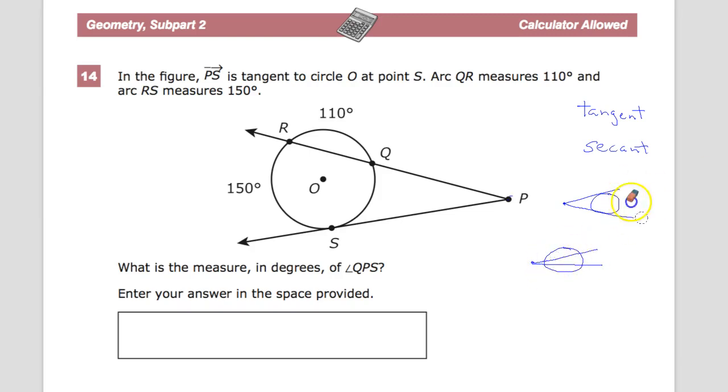So, no matter which one it is, it doesn't really matter. You can solve them the same way every time. Really, the formula ends up being that the measurement of the outside angle is equal to one half the difference between the two intercepted arcs.